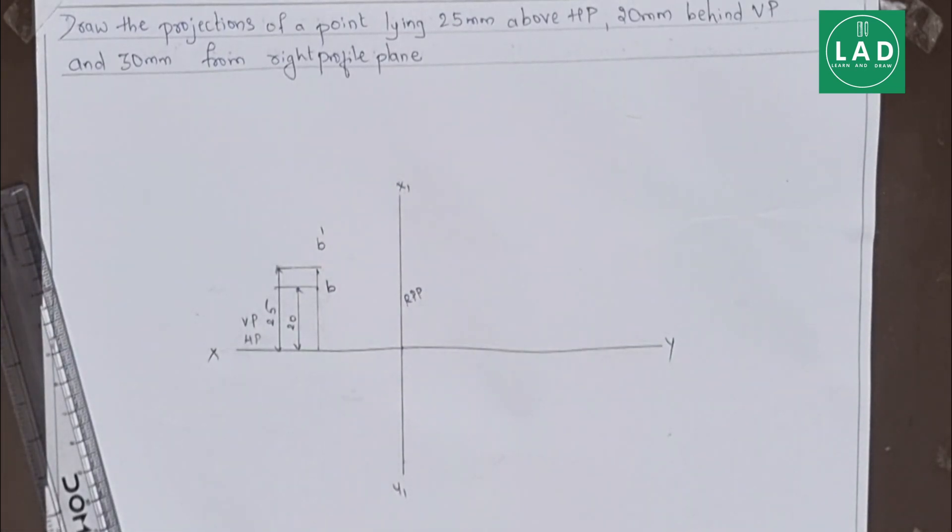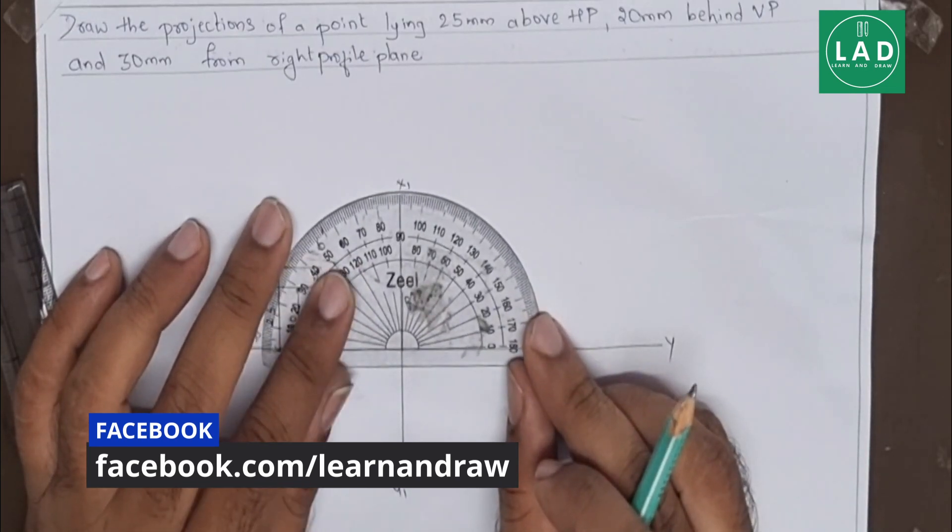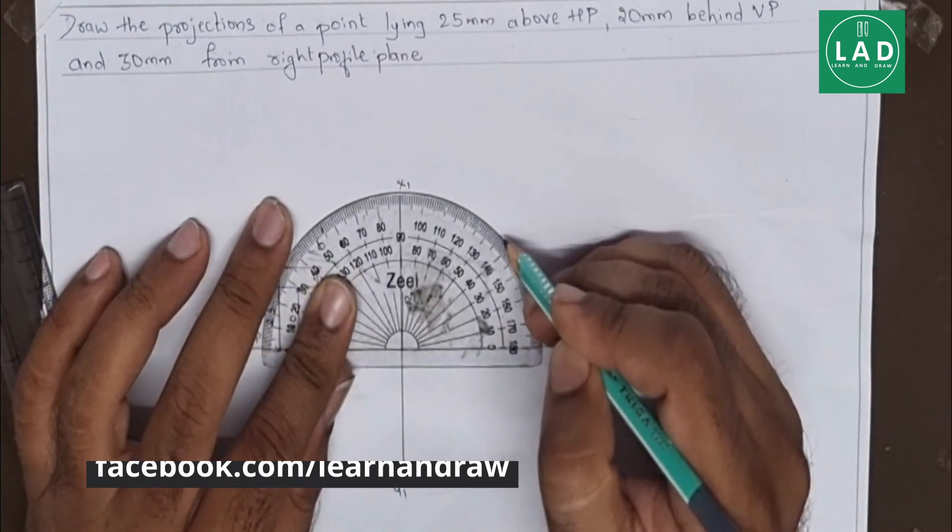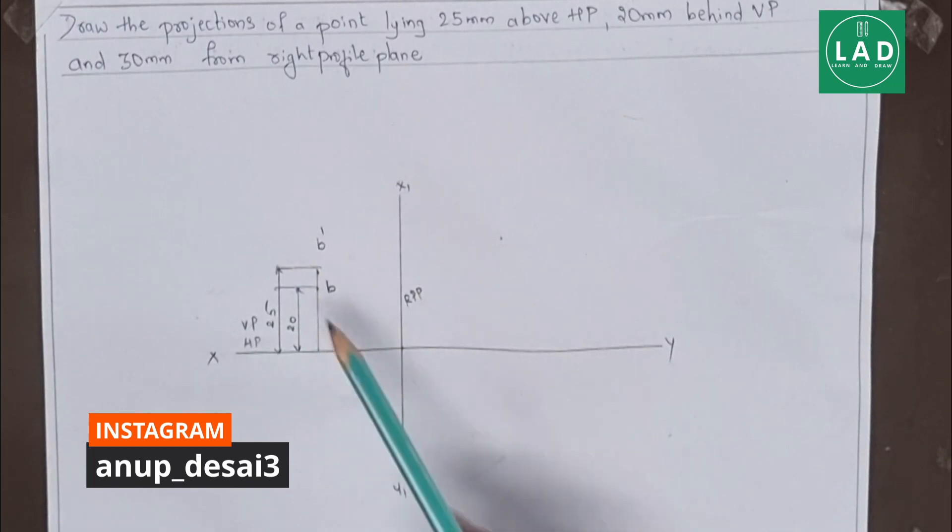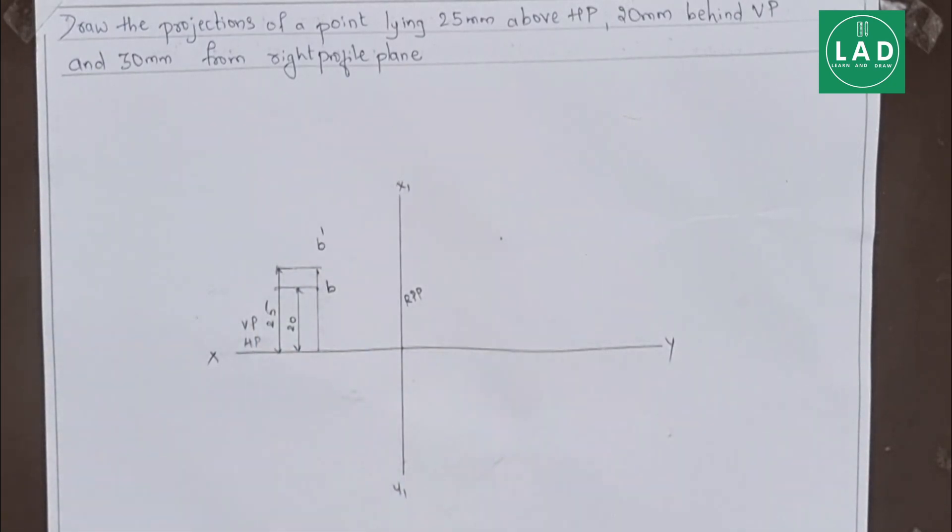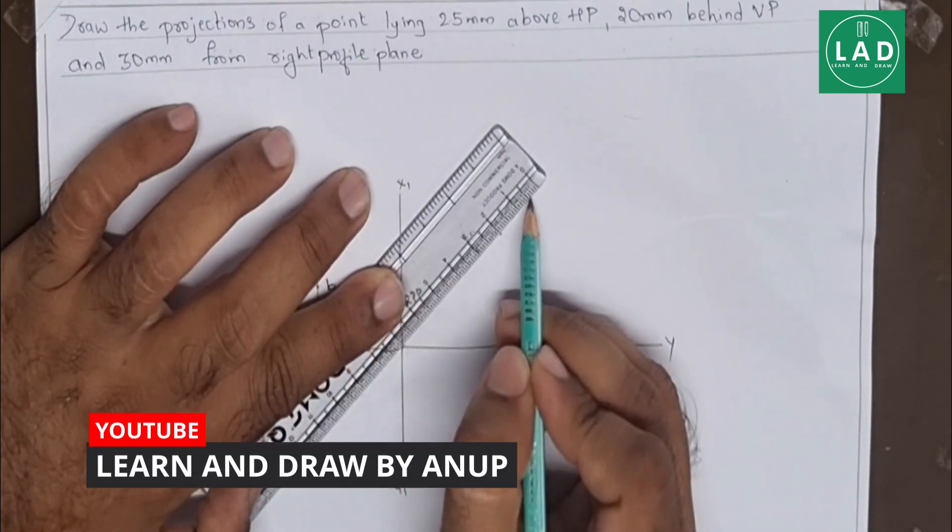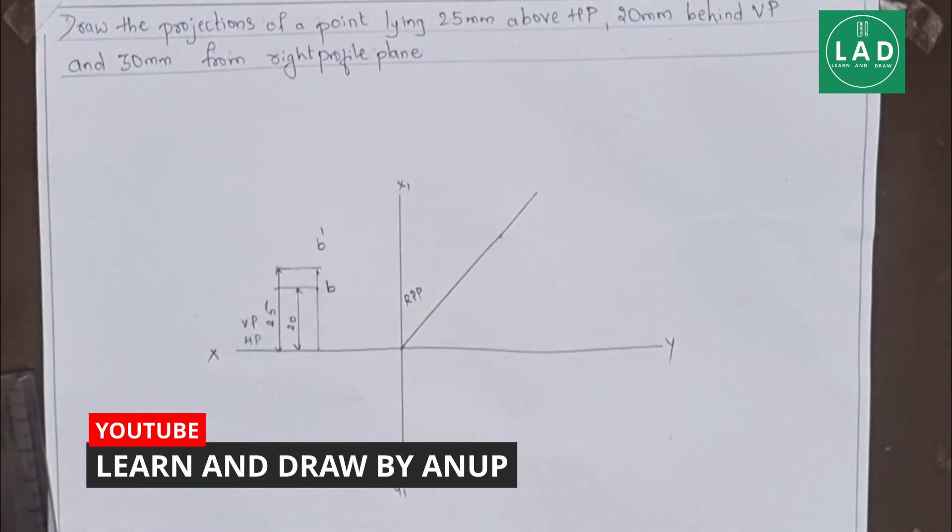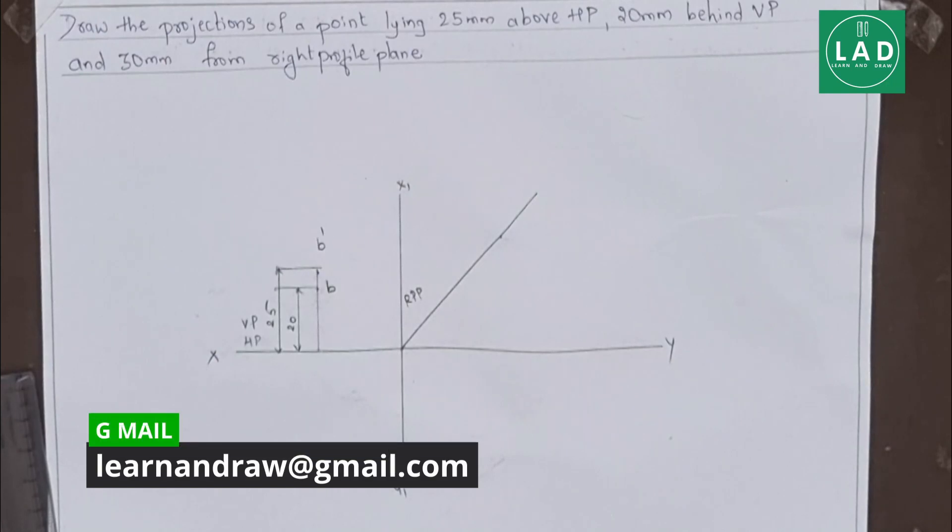The last step now is we have to draw the left side view. To draw the left side view, we have to draw a line which is 45 degree to the profile plane. Let's mark this point 45 degree. Since both these points are above the X1, I have marked 45 degree above this XY line. If the top view is below the XY line, we have to draw this 45 degree below the XY line.